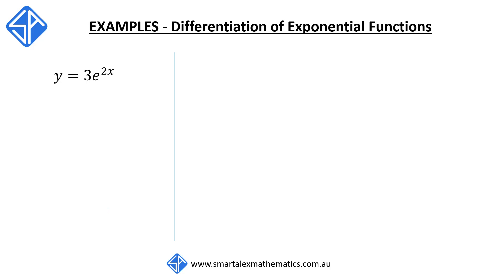Our first example: the function y is equal to 3 times e to the 2x. To differentiate this, everything stays the same, but we have to multiply by the derivative of 2x, which is 2. So dy/dx will be equal to 6 times e to the 2x.